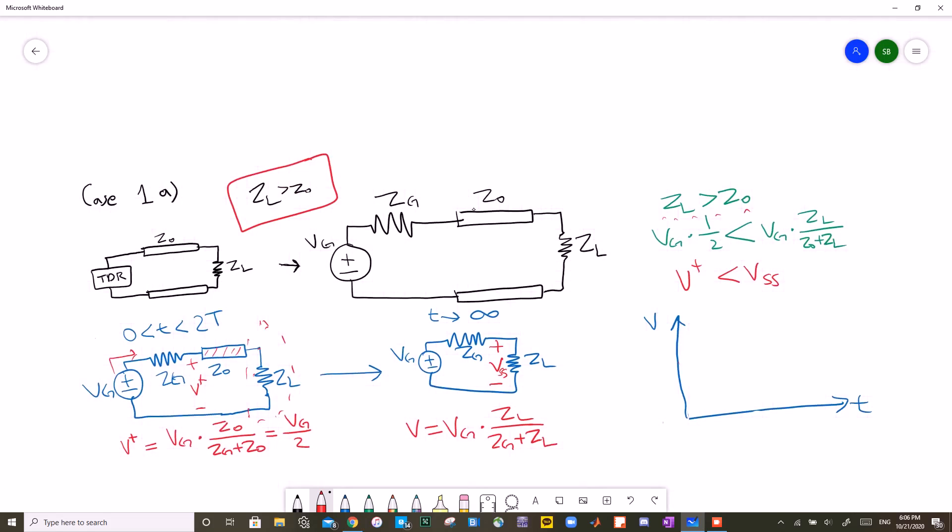When steady state has not been reached yet, the transmission line is still there. This means that any wave coming out from the voltage generator cannot comprehend what's happening on the other side of the transmission line. Why is that? It's because the transmission line is much too long for the voltage wave to see what's on the other side. It only sees ZG and Z0. This will effectively make a voltage divider between Z0 and ZG, therefore making the incident wave VG over 2.